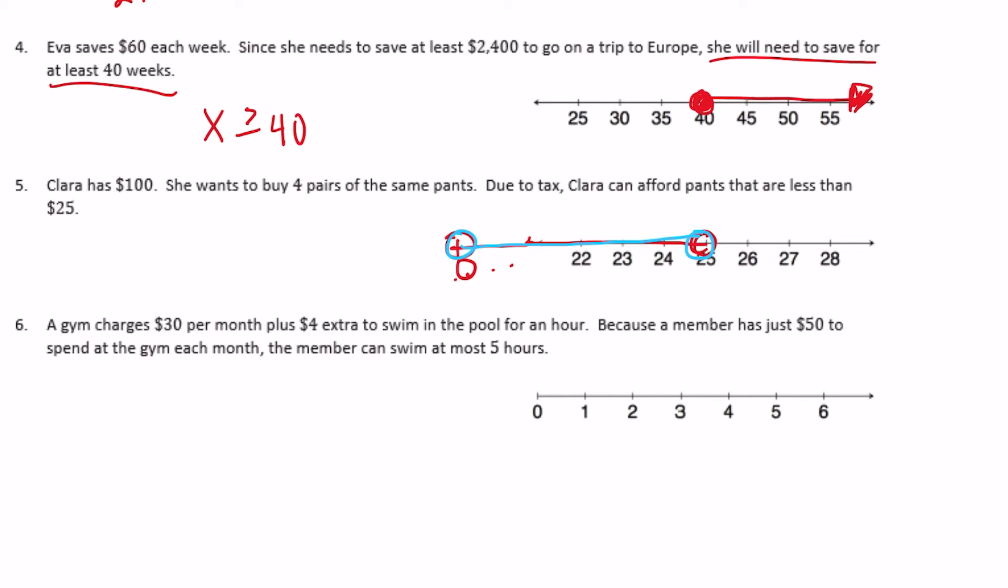So I'm going to use a blue graph there. So she can spend anywhere between $0 and $25, so x needs to be less than $25 but it needs to be greater than $0. So 0 is less than x is less than $25.